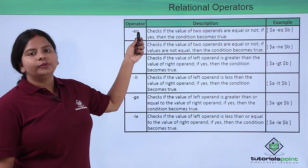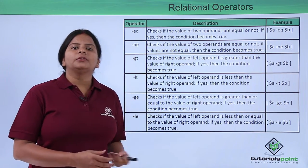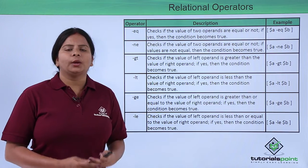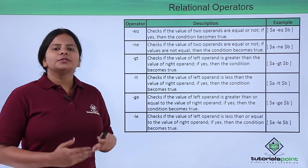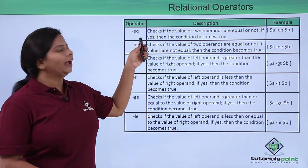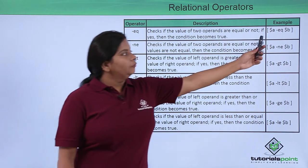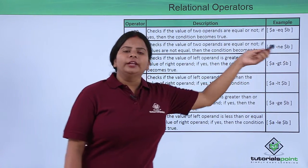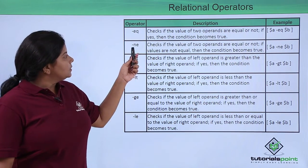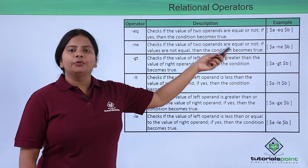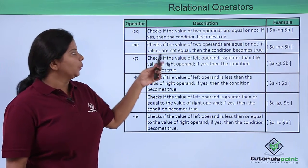The very first is hyphen-eq, which acts the same as the equals-to operator — it checks whether two values are equal or not. Instead of using double equals-to, I will use -eq, which will check whether variable a is equal to variable b. If the condition is true it gives a true value, if not it gives a false value.